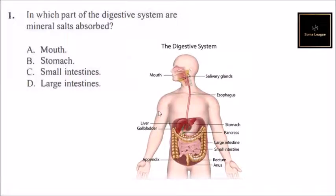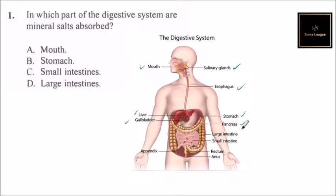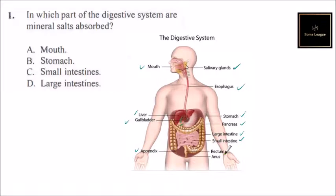Let's look at the way the digestive system is arranged in our body. We have the mouth, salivary glands, esophagus, liver, stomach, gallbladder, and pancreas. The pancreas produces insulin, and the gallbladder produces bile, which is a digestive juice. Then we have the small intestine followed by the large intestine, followed by the appendix.